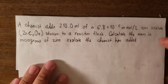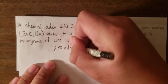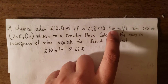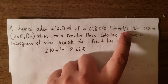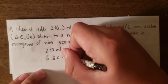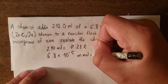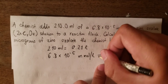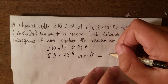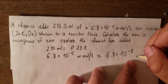First, we convert 210 milliliters to liters, which gives 0.21 liters. Next, we convert the concentration from millimoles per liter to moles per liter. So 6.8 × 10⁻⁵ millimoles per liter is multiplied by 10⁻³, giving 6.8 × 10⁻⁸ moles per liter.